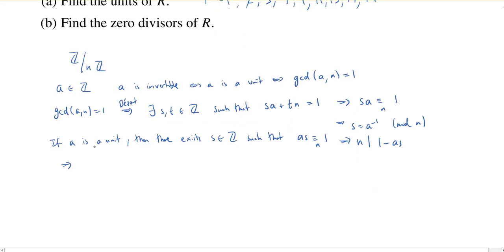So this implies there exists some integer t such that n times t is equal to 1 minus as. Or equivalently, as plus nt, or tn, we can match what we had up above, is equal to 1. So this actually shows that all these steps we had at the end of the first part of the proof were actually, if you like, we could invert those steps. These are actually equivalences. Okay, so we know that we can find elements, integers s and t, such that as plus tn is equal to 1.